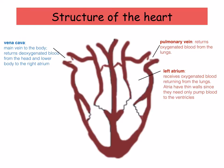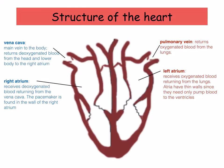You've got the left atrium, which receives oxygenated blood returning from the lungs. The atria have thin walls, since they only need to pump blood to the ventricles. The right atrium receives deoxygenated blood returning from the vena cava. The pacemaker, which we'll discuss in a moment, is found in the wall of the right atrium.